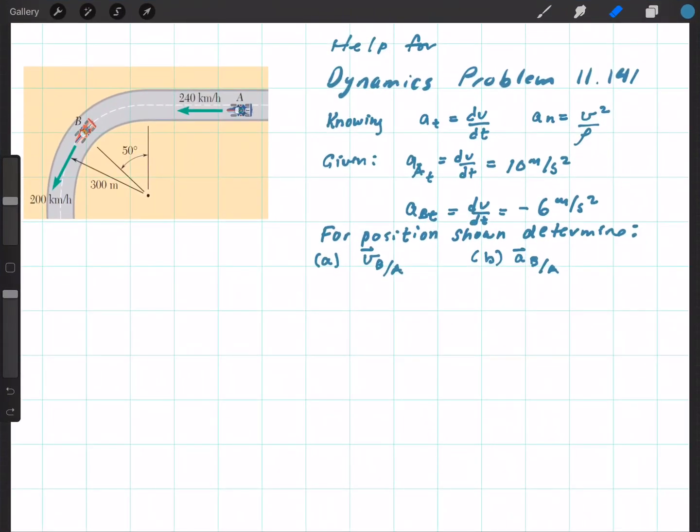This is some help for dynamics problem 11141. A race car A is traveling on a straight portion of a track while race car B is traveling on the circular portion of the track.